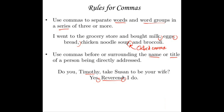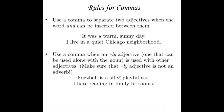Next, use a comma to separate two adjectives when the word "and" can be inserted between them. For example, "it was a warm, sunny day" — you could easily say "it was a warm and sunny day." But "I live in a quiet Chicago neighborhood" — you wouldn't say "a quiet and Chicago neighborhood," because Chicago is normally a noun that only functions as an adjective right in front of a noun. You wouldn't say the neighborhood was quiet and Chicago; that makes no sense. So, no comma.